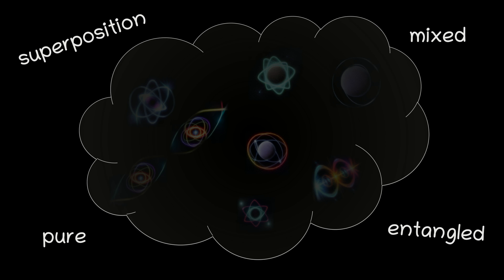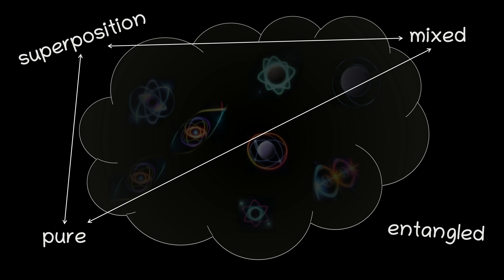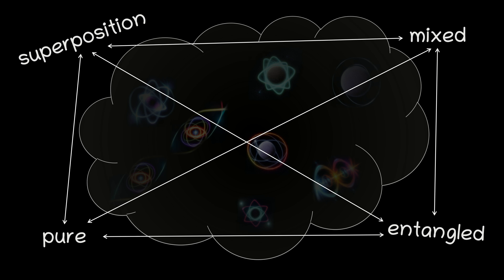So, how are all these terms related to each other? A pure state can be a superposition, as it can exist in a combination of basis states with definite probabilities. A mixed state can also be a superposition, but it involves a statistical mixture of different pure states. Entanglement typically involves multiple particles and can occur in both pure and mixed states. Entangled particles are correlated in a way that the state of one particle cannot be described independently of the state of the other. In summary, superposition is a fundamental concept that can apply to both pure and mixed states, while entanglement is a phenomenon that can occur in both pure and mixed states but involves correlations between multiple particles. Pure and mixed states describe the level of knowledge or uncertainty about a quantum system's state.